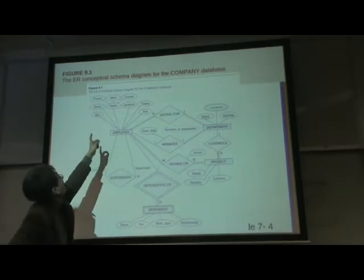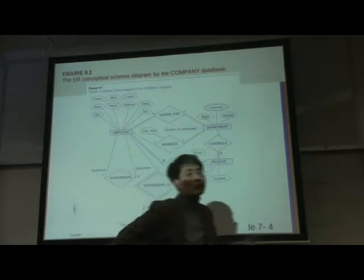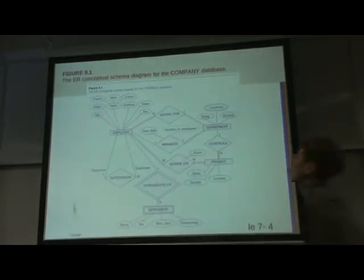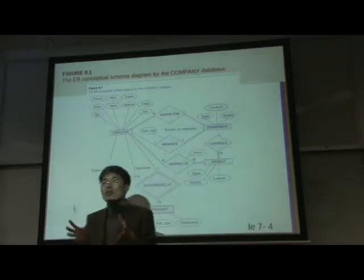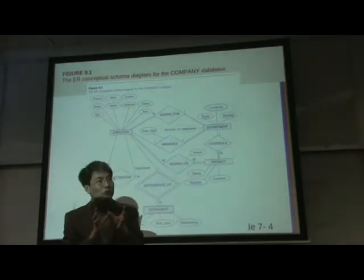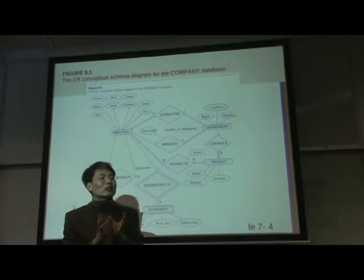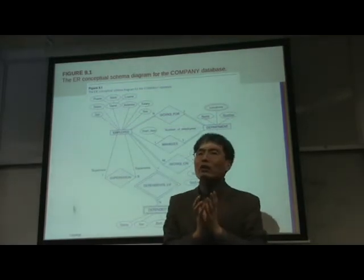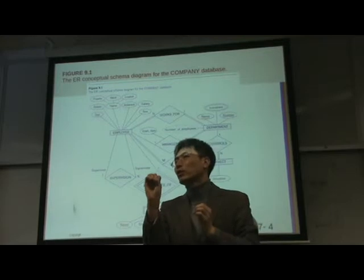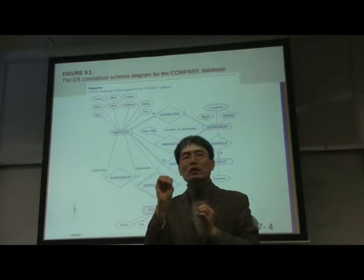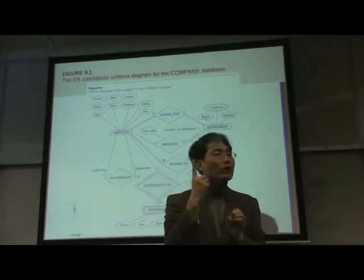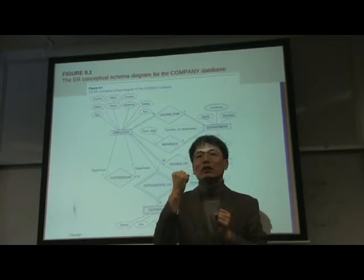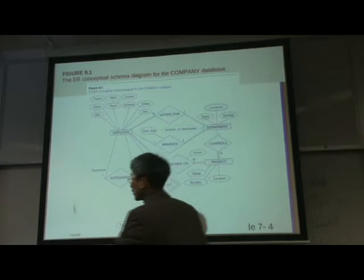What about the composite? Name: first name, middle name initial, last name. We cannot keep the composite attribute structure in the relational model. According to the relational model, each attribute should have one value — atomic value, always.